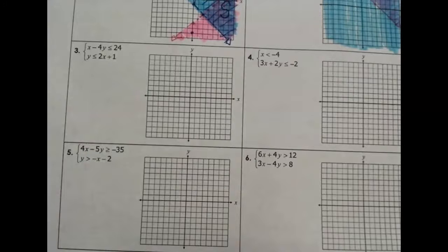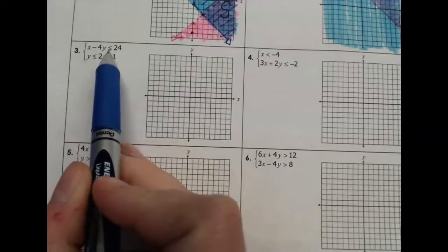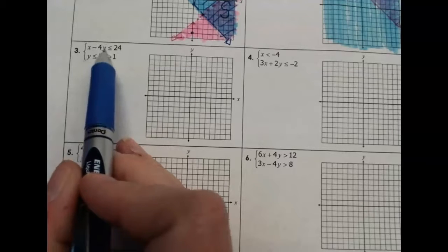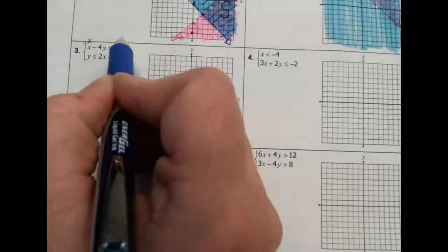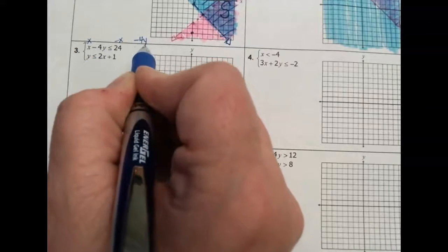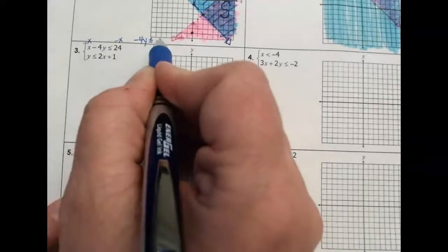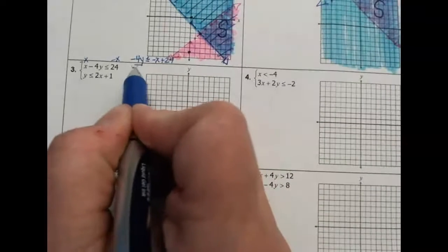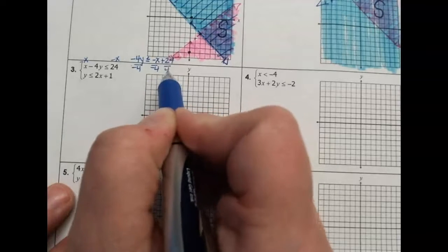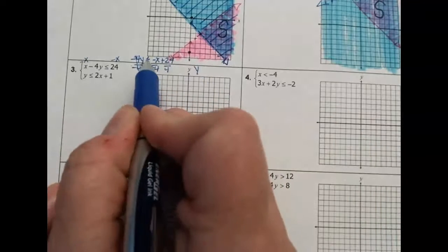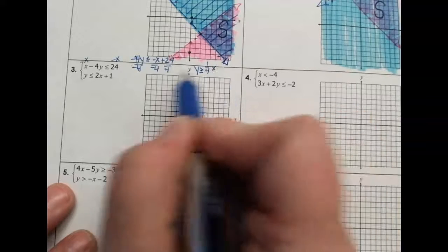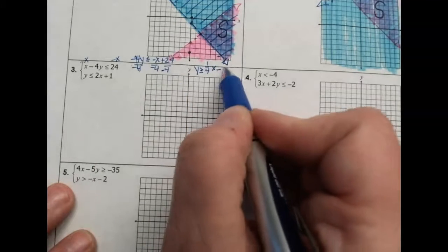Both of these are not in slope-intercept form, so we need to make adjustments. Whenever you have an equation in standard form, solve it for y — get y by itself. To do that, subtract x from both sides to get negative 4y is less than or equal to negative x plus 24. Now divide everything by negative 4. Because we divided by a negative number, the inequality changes direction: y is greater than or equal to positive one-fourth x minus 6.